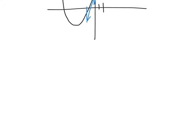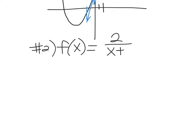We're going to move on to a different type of function. We can do these with radicals, rational functions, all kinds of things. Let's do f of x equals 2 over x plus 3. We're going to find a formula for the tangent line, and then find the equation of the tangent line at x equals negative 1.